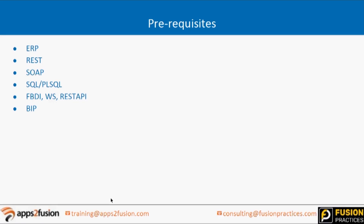ERP stands for Enterprise Resource Planning. REST uses JSON to communicate and SOAP uses XML — these are the two web services which Oracle exposes. For database work, we will procure a database, install an agent, and run validations and PL/SQL procedures there. FBDI — File Based Data Import — is an option Oracle provides where you load a file, run a job to load to the interface table, and then run the import program.